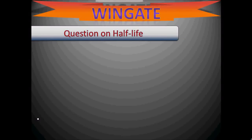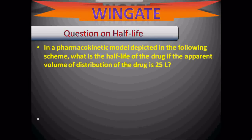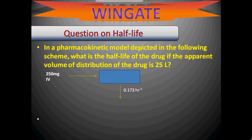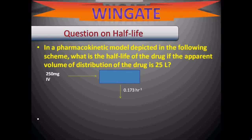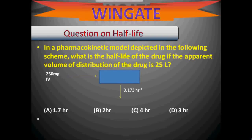Next, a question on half-life. In a pharmacokinetic model, what is the half-life of a drug if the apparent volume of distribution is 25 L and the elimination rate constant is 0.173 hr⁻¹ with 250 mg given by IV route? Options: A: 1.7 hr, B: 2 hr, C: 4 hr, D: 3 hr.